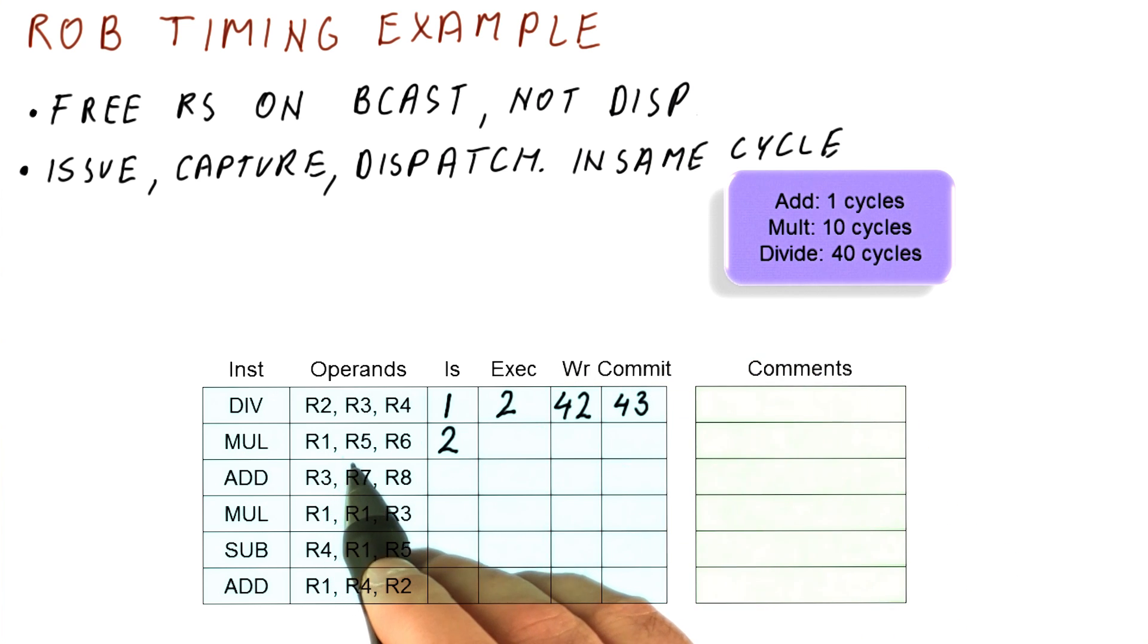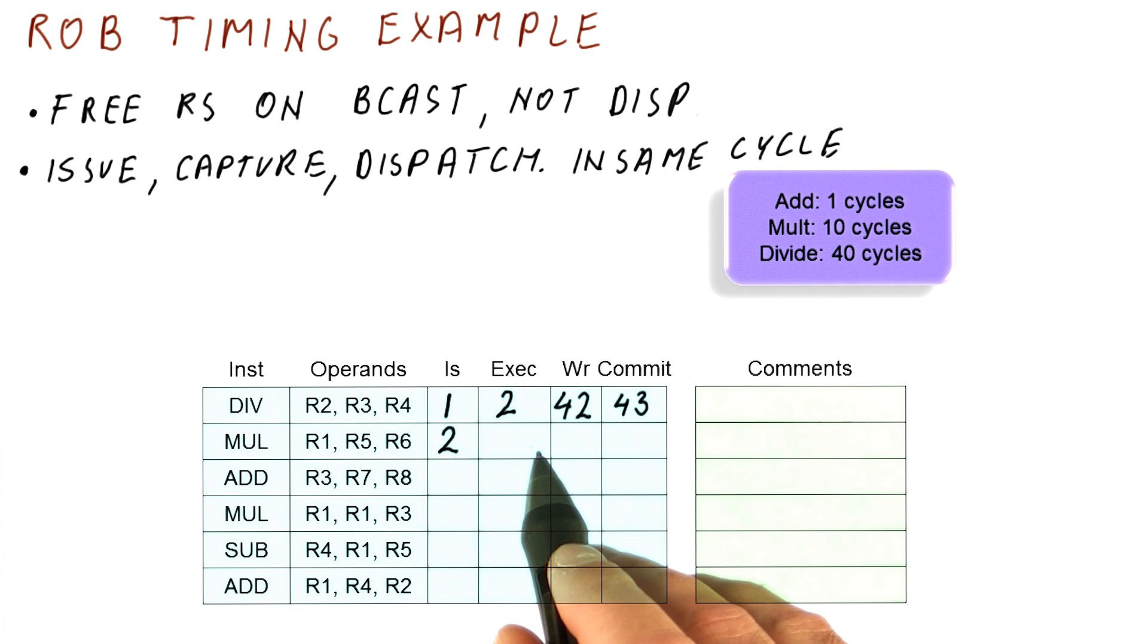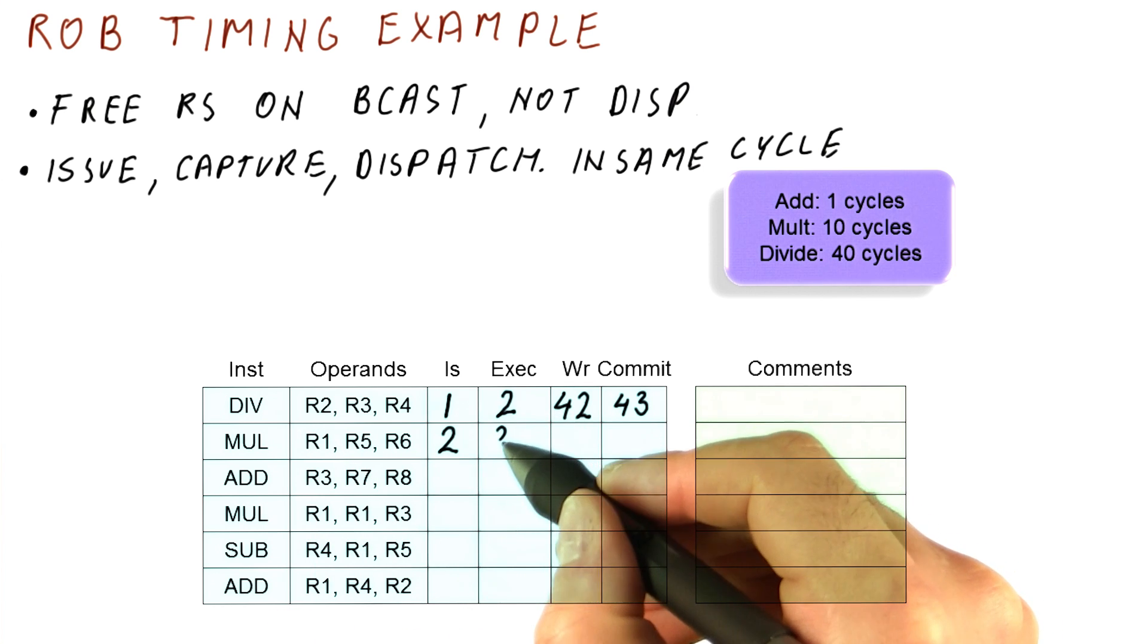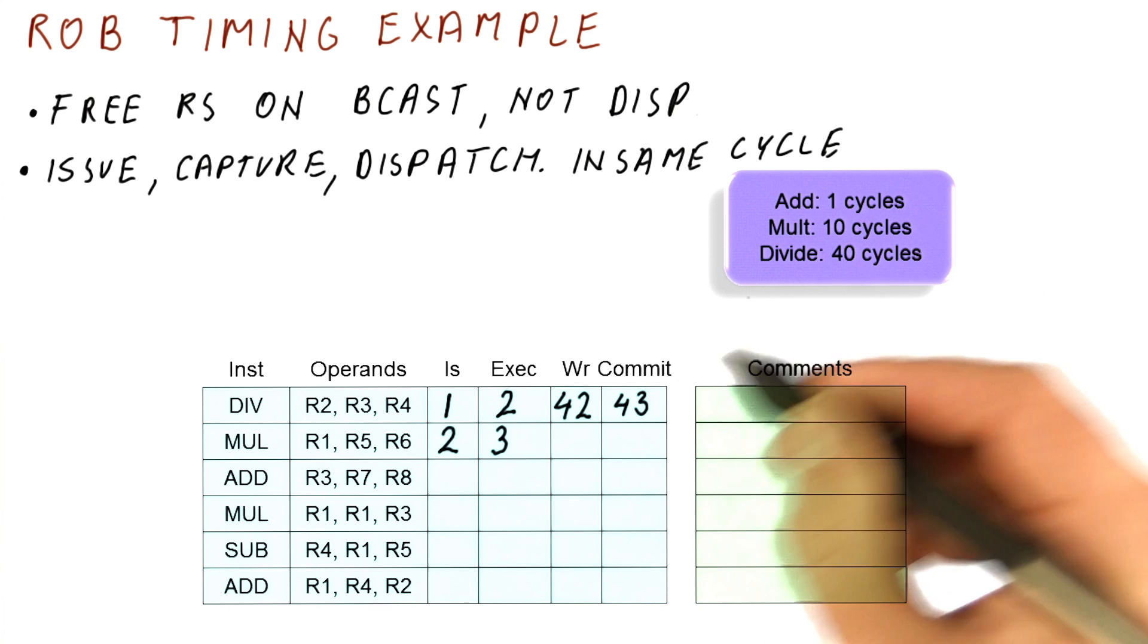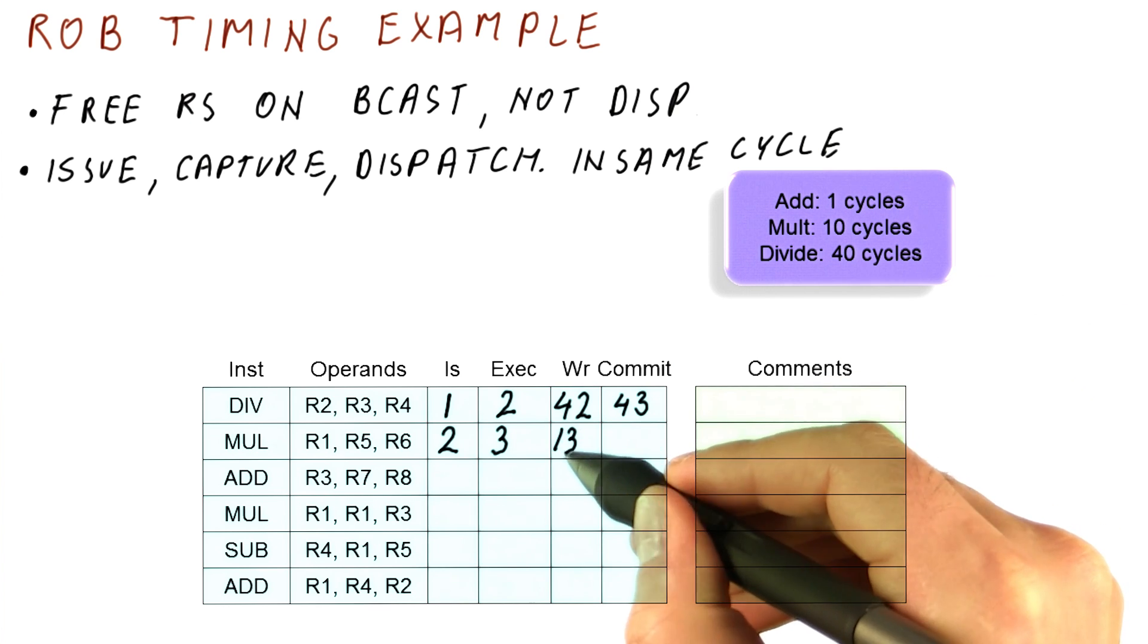When can it execute? Well, it uses R5 and R6. This doesn't use R3, so it can actually execute in the very following cycle. So we will start executing it here, takes 10 cycles, so we will broadcast the result in cycle 13.